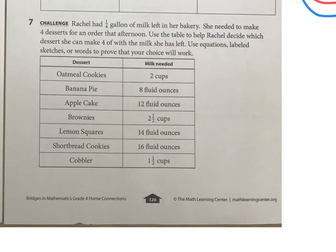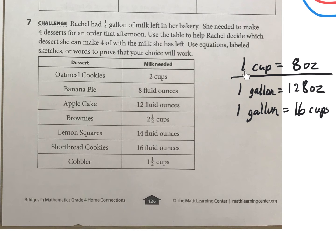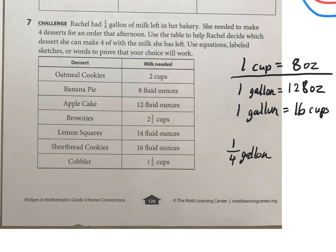This challenge involves American measurement, which we don't know very well. One cup is eight fluid ounces. One gallon would be 128 ounces or 16 cups — pretty annoying, I know. Rachel has one fourth of a gallon of milk left in her bakery, and we need to figure out how much that is in cups and in ounces. For cups: if we just divide 16 by four, we're going to have four cups.